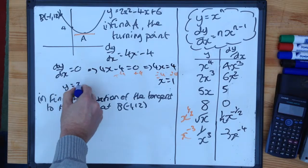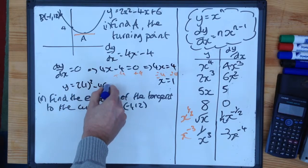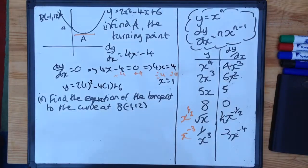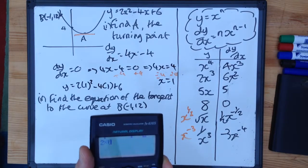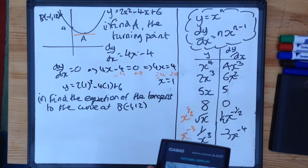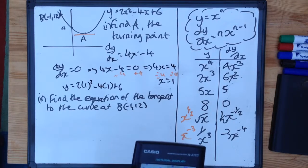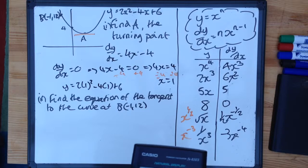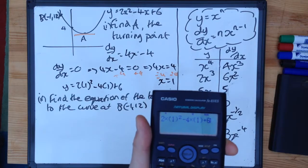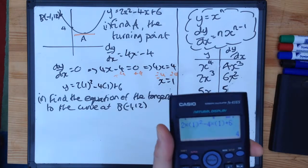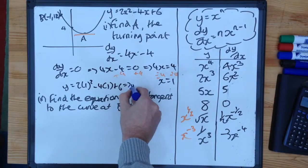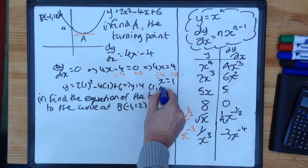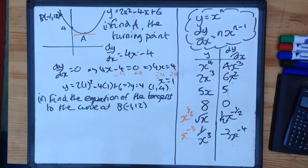To get the y coordinates, we put the 1 back into the original equation. So y is equal to 2 times 1 squared minus 4 times 1 plus 6. You shouldn't really need to put it in your calculator, but you can if you want. So 2 times 1 squared minus 4 times 1 plus 6. You might say you don't really need the brackets. Well, you don't. I'm putting it there because when there's negative numbers, it's a good idea to do that. And we get y is equal to 4. So the coordinate is x is 1, y is 4.